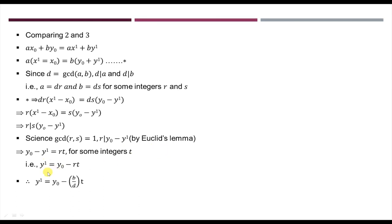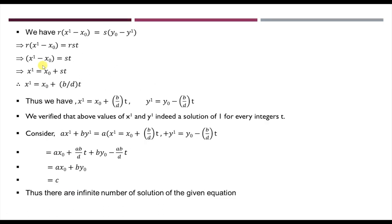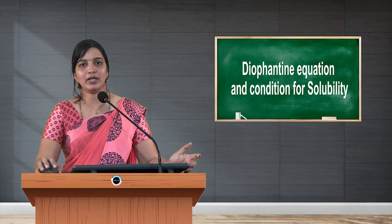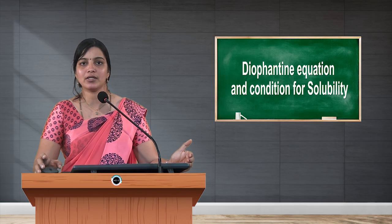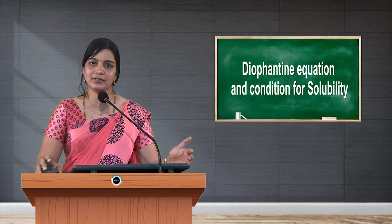You can verify by substituting x dash and y dash back into ax plus by: if you get c, then x dash equal to x naught plus (b/d)·t and y dash equal to y naught minus (b/d)·t is the correct answer. By this we can say there are infinitely many solutions for the given equation. We will study further based on this Diophantine equation in our upcoming classes. Thank you.